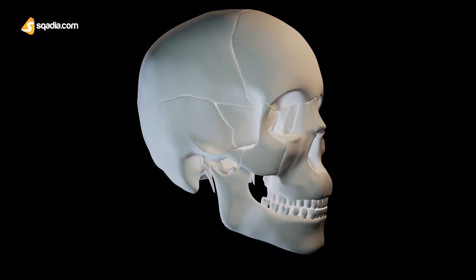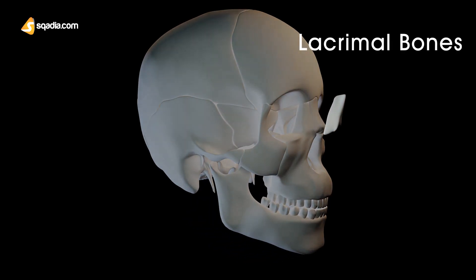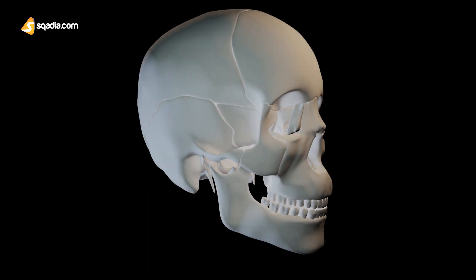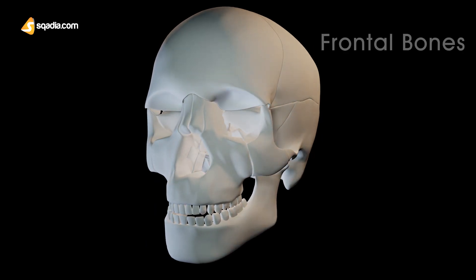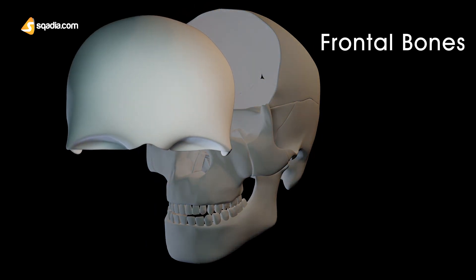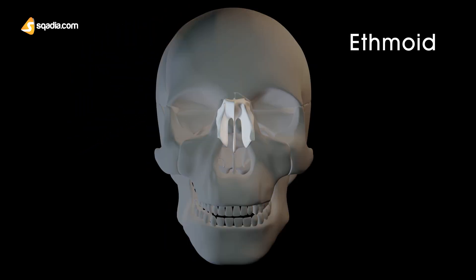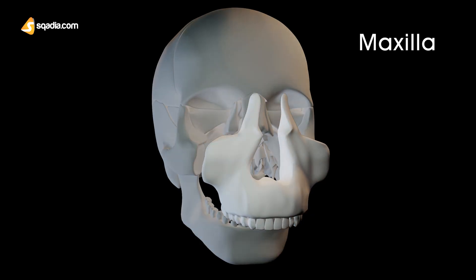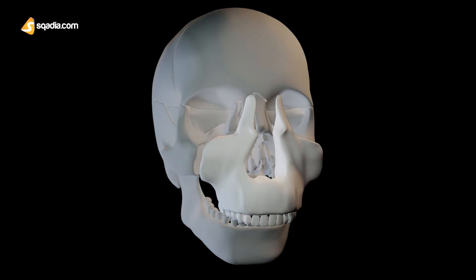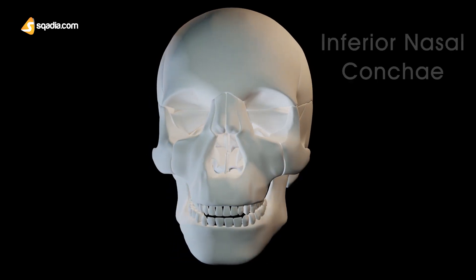As you can see, these are the lacrimal bones. They articulate with four other bones of the facial skeleton. Two of these bones make up the cranium: the frontal bone and the ethmoid. The other two articulations are with the maxilla and the inferior nasal concha. Always remember that the lacrimal bone forms sutures with all these other bones.